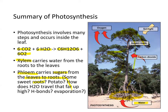Some roots are sweet — that's why they have a sugary taste. Potato is also a root vegetable that has a lot of starch. How does water travel up this far, this high? This is all because of hydrogen bonding and evaporation of water around the leaves that creates a negative pressure.